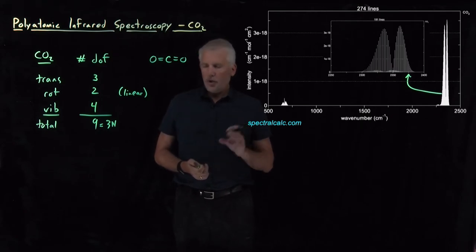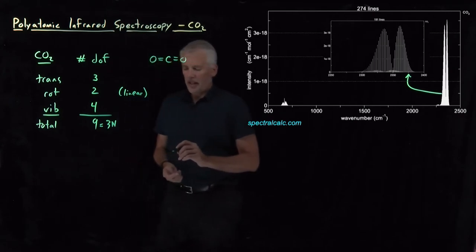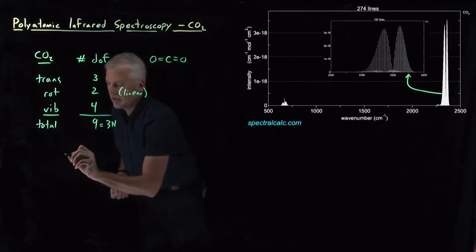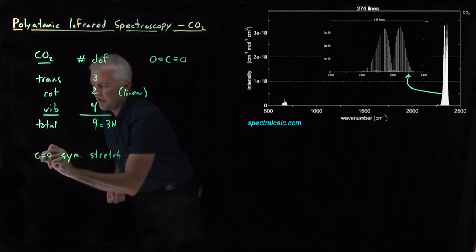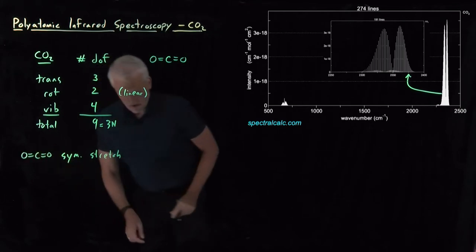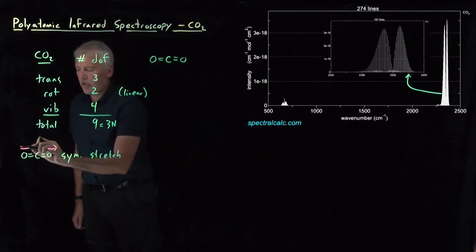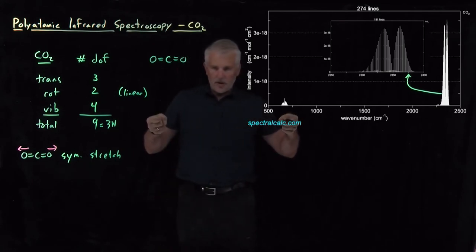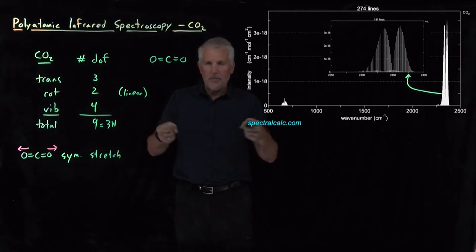Those vibrations are well understood. CO2 has a symmetric stretch vibration — both of the CO bond lengths get longer at the same time, and then after they get long enough, they turn around and come back, and then both get shorter at the same time. So the CO stretches are happening symmetrically.